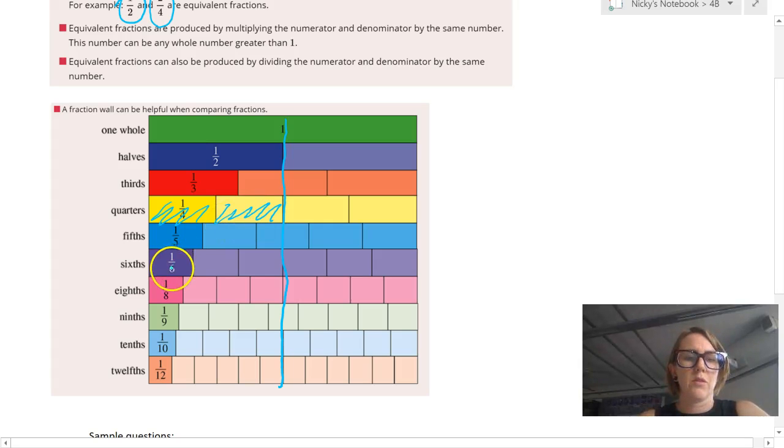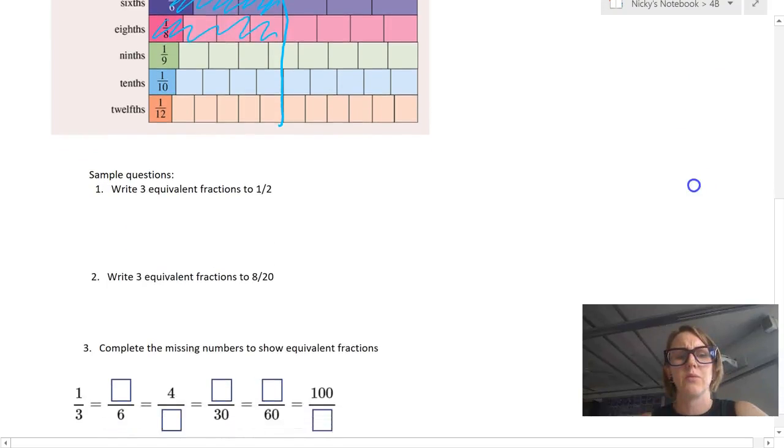Here we've got one sixth, two sixths, three sixths. That has the same value. We've got one eighth, two eighths, three eighths, four eighths, okay, etc. So let's do some sample questions.